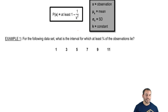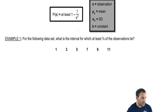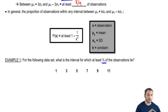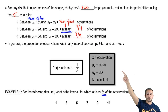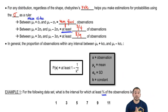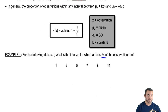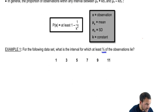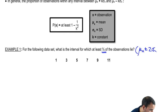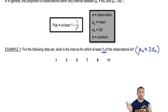Enough about that formula. For the following data set, what's the interval for which at least three-fourths of the observations lie? We want at least three-fourths, which corresponds to two standard deviations above and two standard deviations below the mean — basically the mean plus or minus two standard deviations.